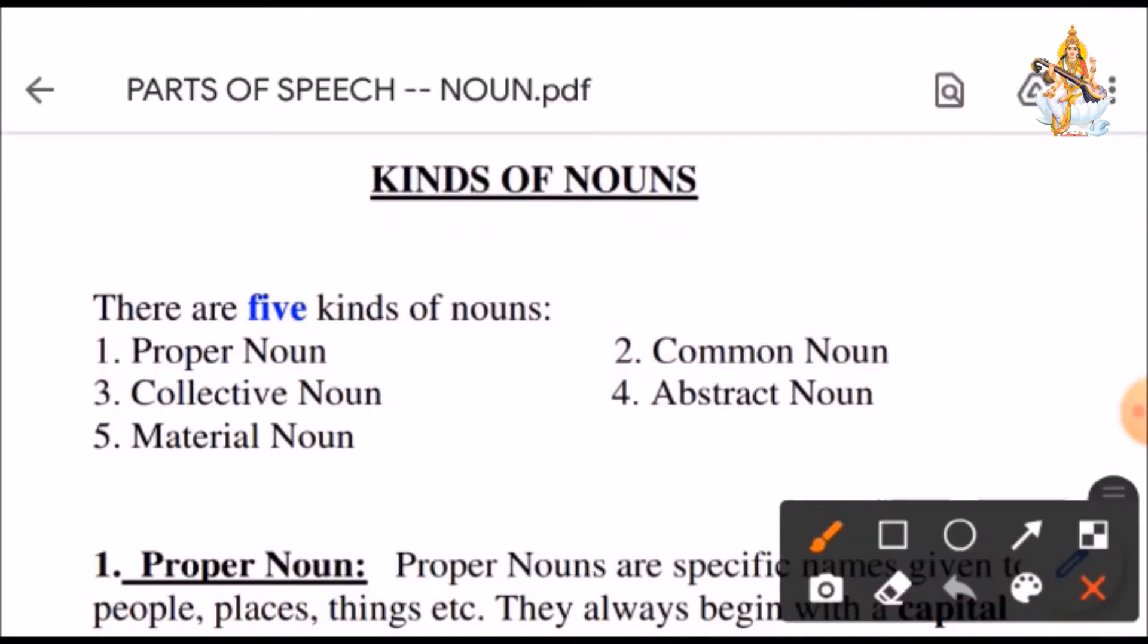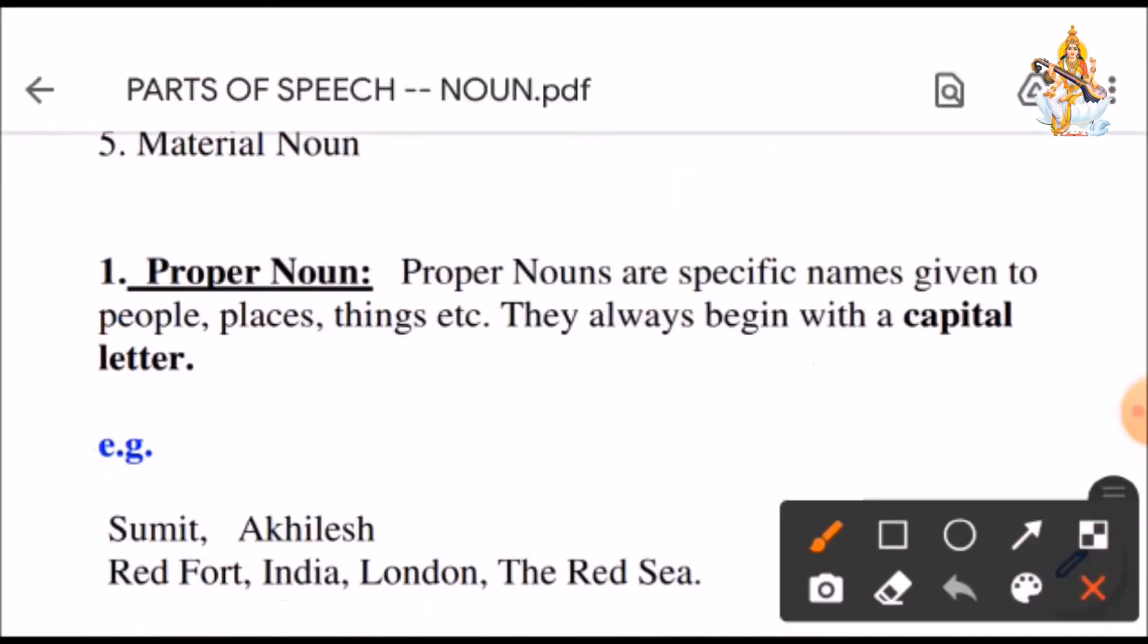Now, let us study kinds of nouns. There are five kinds of nouns. Proper noun, common noun, collective noun, abstract noun and material noun. Now, first, proper noun.